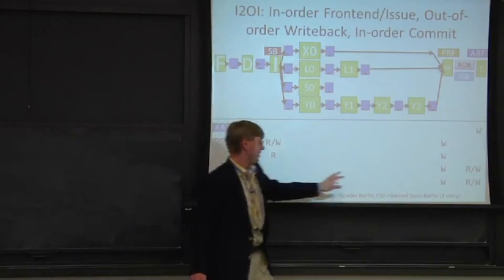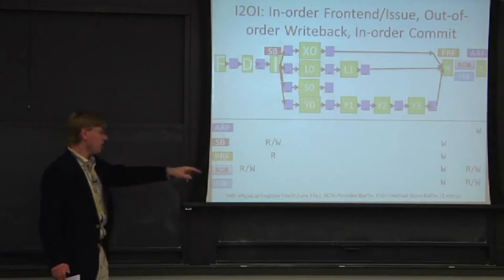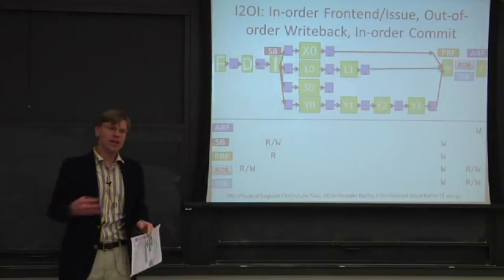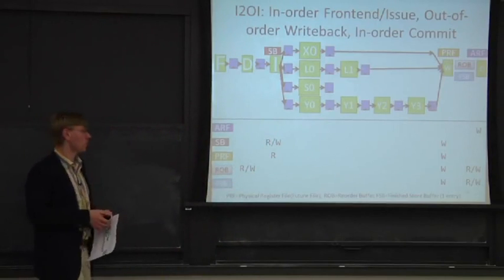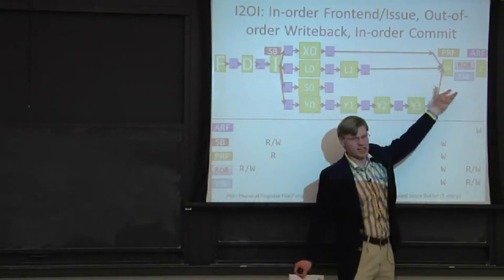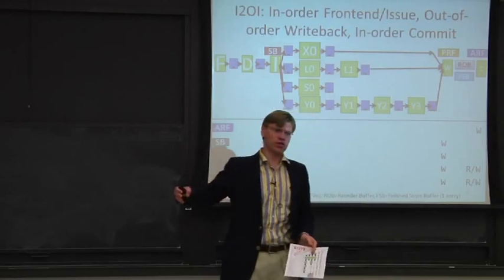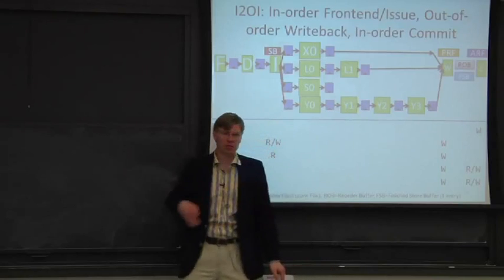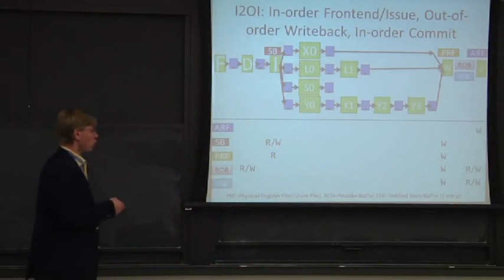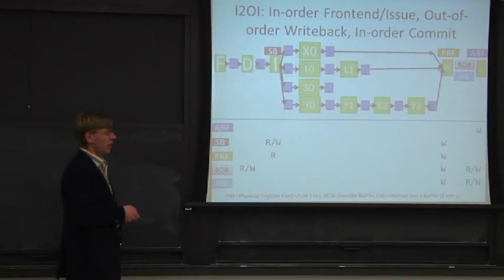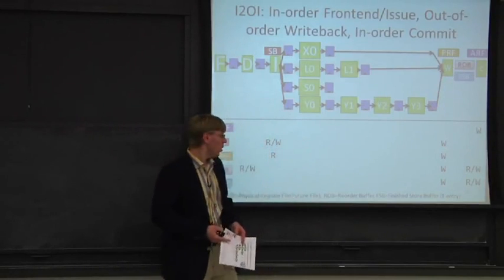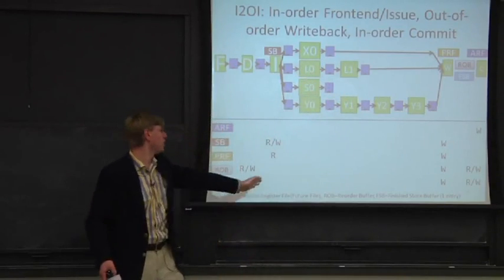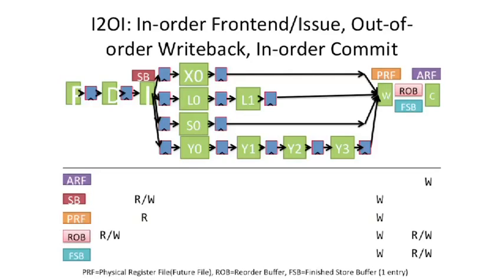The reorder buffer has many read and write points. When an instruction is issued — going from decode to issue stage — it allocates a location in the reorder buffer. At the end of the pipe, once the value completes, state information in the ROB is updated to indicate that the output register for that instruction is now ready. When we commit, the instruction is cleaned out of the reorder buffer. The finished store buffer is written at the end of the pipe and cleaned when it actually posts to memory. Loads will read from it in a bypassing mode.